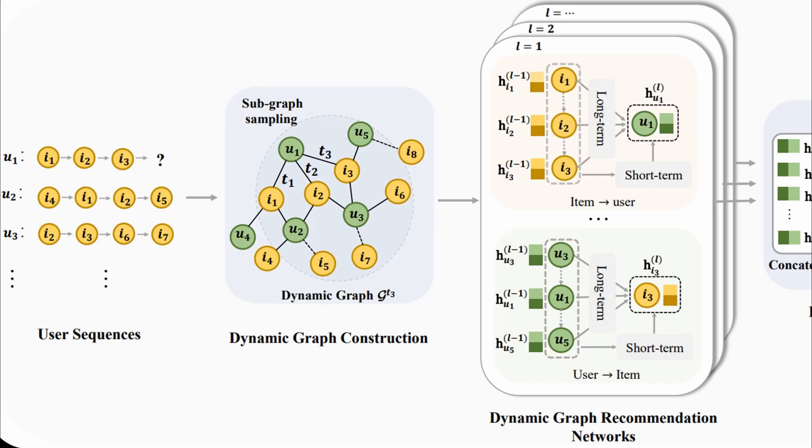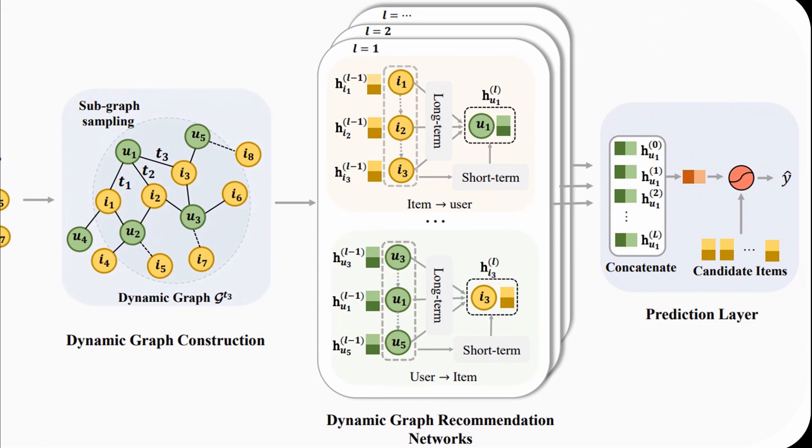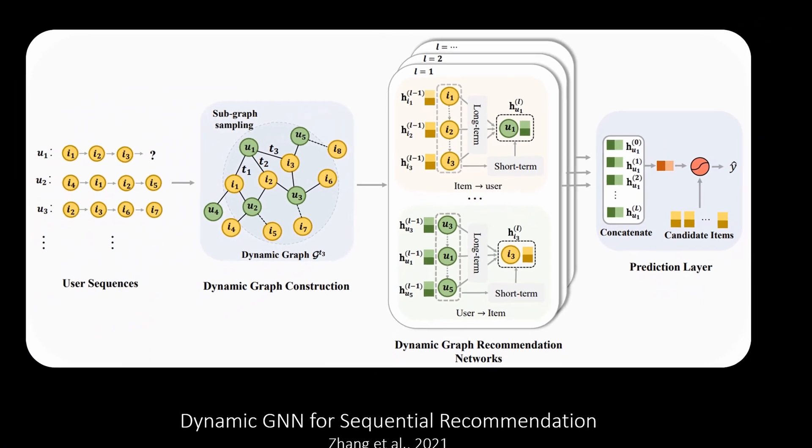For further details the paper is linked in the video description. This module is stacked several times, for example three as in the paper. For a specific user the embeddings after each layer are then combined and used to perform link prediction with a set of candidate items. This can then be optimized with a cross entropy using the labels of the chronologically next interaction. By the way this reminds me a bit of next token prediction in NLP problems.